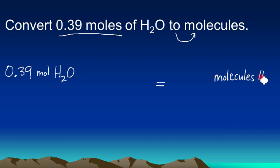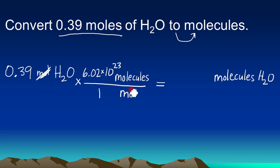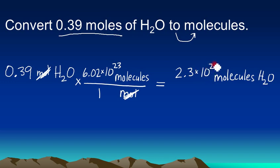We set up a conversion factor. Moles goes in the denominator since that's what we're starting with, and molecules goes on top since that's what we're converting to. One mole equals Avogadro's number of molecules, so we put 6.02 times 10 to the 23rd on top. We cancel moles top and bottom, leaving molecules of water. Multiplying 0.39 times 6.02 times 10 to the 23rd gives us about 2.3 times 10 to the 23rd molecules of water.